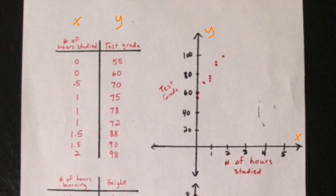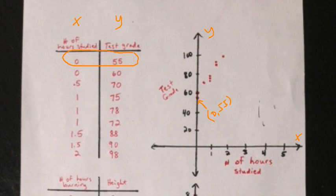I've already plotted these points just for the sake of time. You guys already know how to plot ordered pairs. Just to give you a bit of a refresher, this coordinate right here would be considered (0, 55) — that's the first ordered pair in my chart. What this means is that for the student who studied zero hours, his resulting test grade was 55. This coordinate over here represents (2, 98), so for the student who put in two hours of studying, he earned a 98.